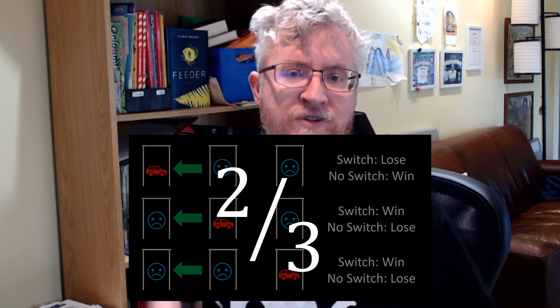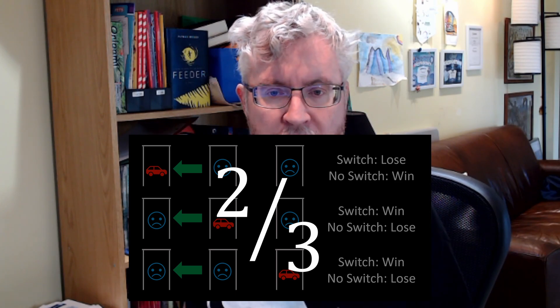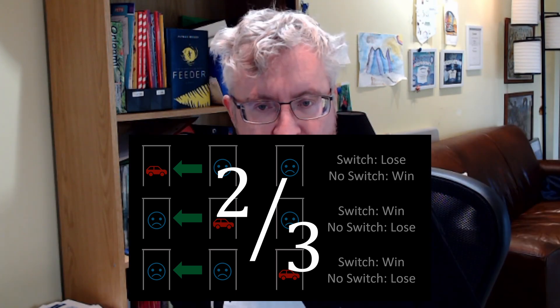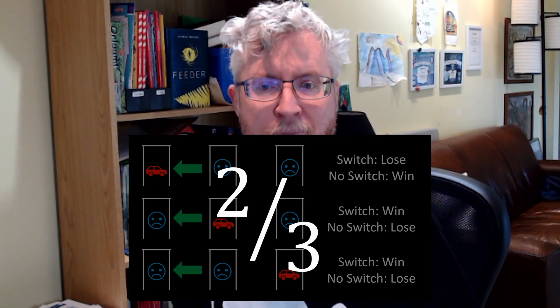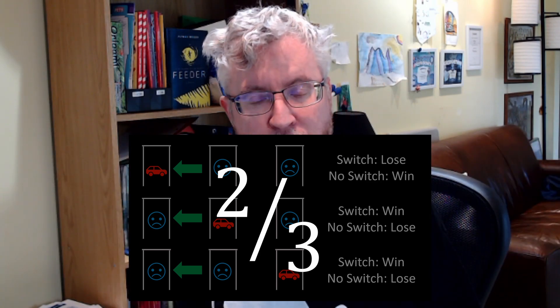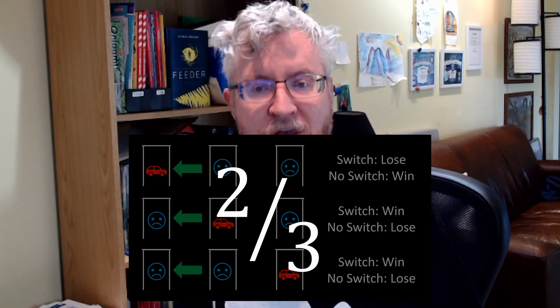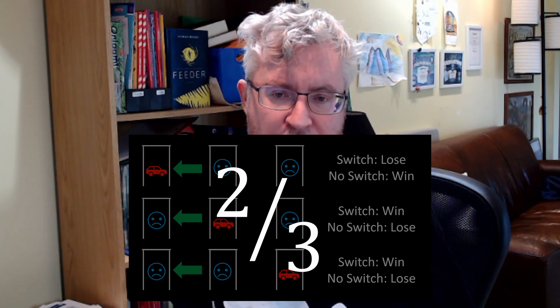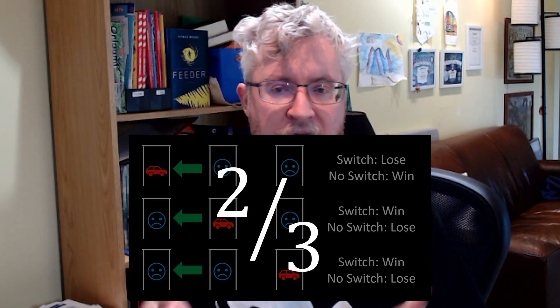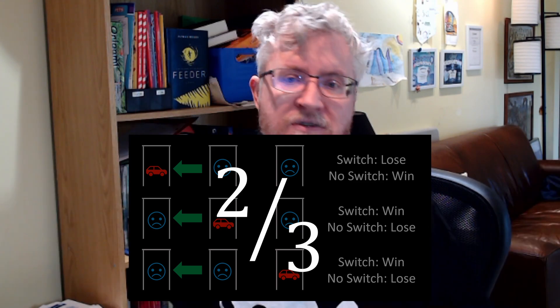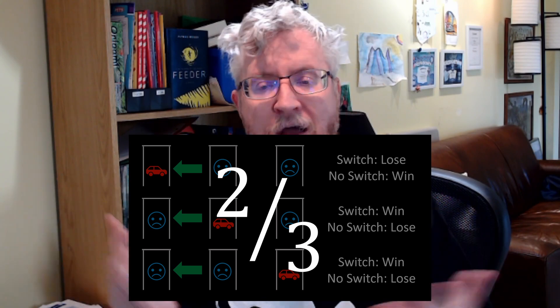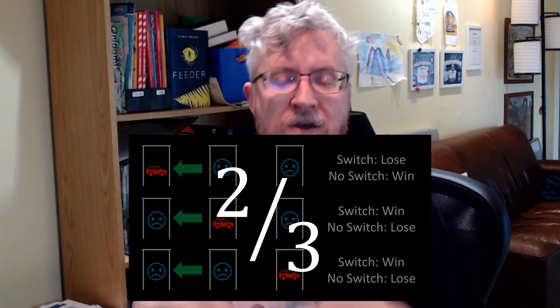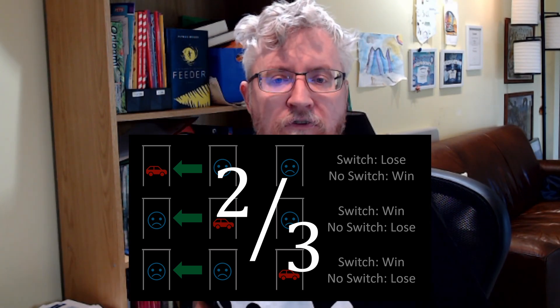Hopefully I got you there and you understand this now. If not, pause the video and figure it out for yourself — do the math, maybe do a few example problems. It's not that complicated. It just takes some time to wrap your head around it because this is somewhat counterintuitive to the way our natural biases work.